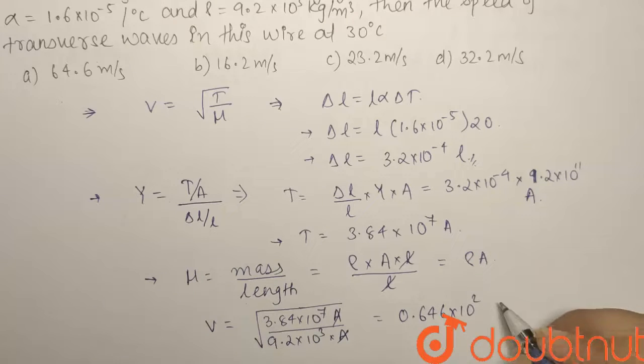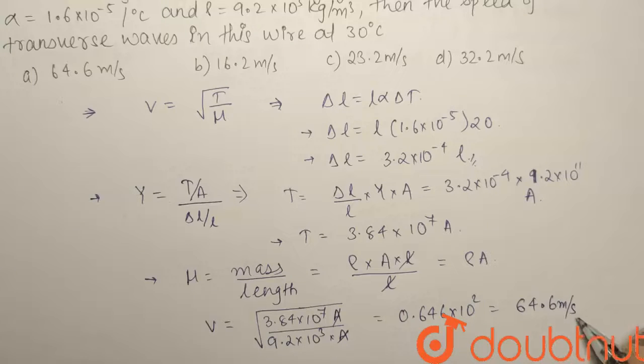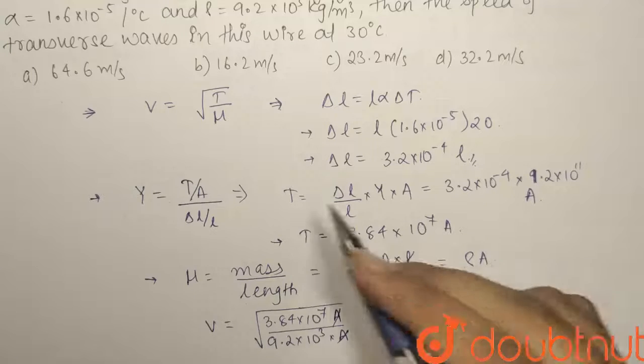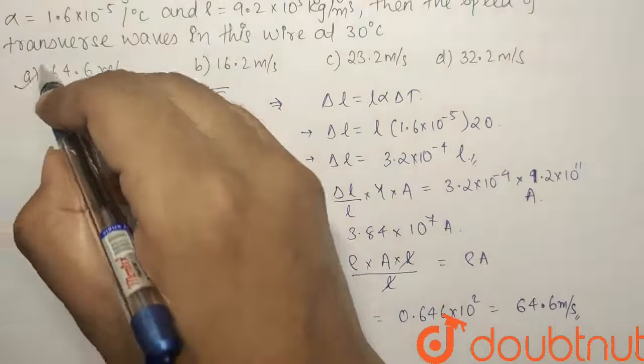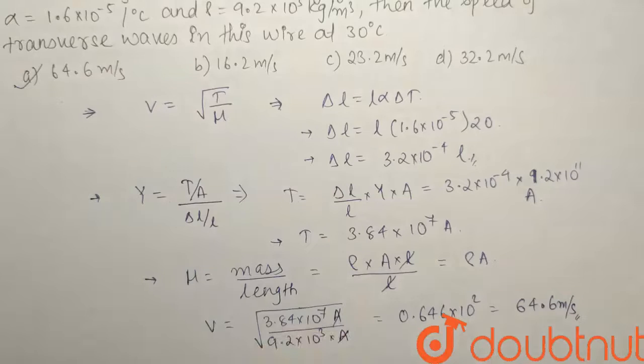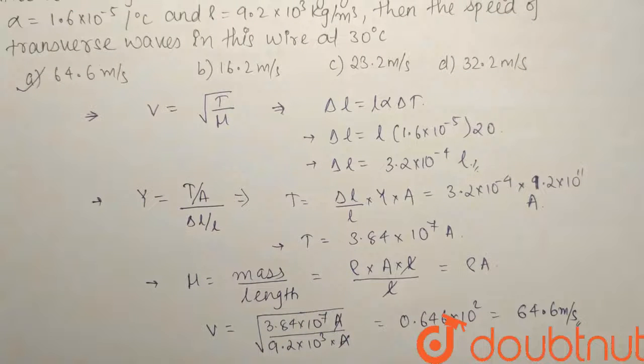Square root of 3.84 divided by 9.2 will give 0.646 × 10^2, so it is basically equals to 64.6 meters per second. So we have found out the velocity and having a look at the option it clearly matches our option A, so our option A 64.6 is the right answer. Thank you.